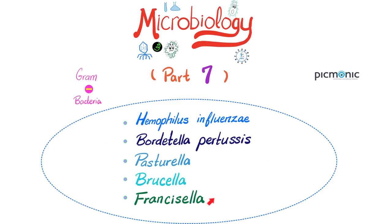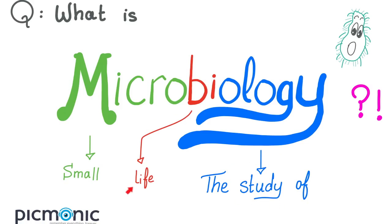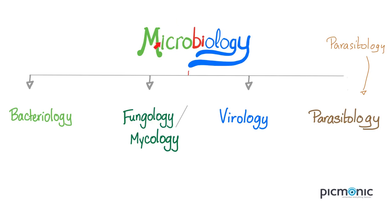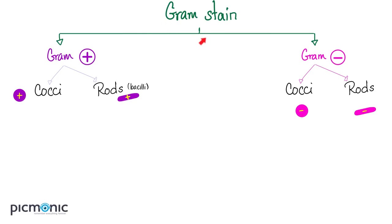All of today's organisms are gram-negative bacteria that are coccobacilli. They are not cocci, they are not bacilli — they are kind of in between, like a short rod. Gram-positive bacteria are divided into cocci and rods. For gram-positive cocci, ask: catalase positive or negative? For gram-positive bacilli: spore-forming or non-spore-forming?